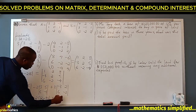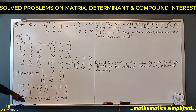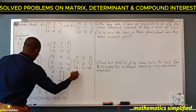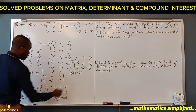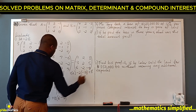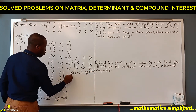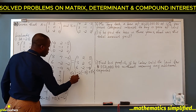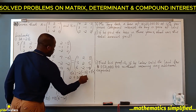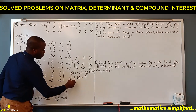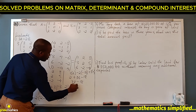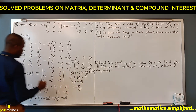Then minus 2 times (12 - 30) = minus 2 times -18 = +36. Plus 3 times (6 - 12) = 3 times -6 = -18. So the determinant is 2 + 36 - 18, which equals 38 - 18 = 20. The determinant is 20.